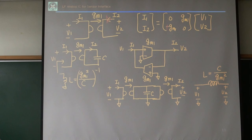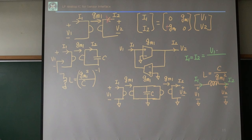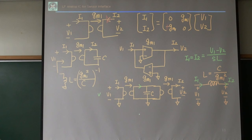Let's verify whether this works. I need to check that i1 equals i2. Looking at the right-hand circuit, i1 must equal i2 and satisfy the floating inductor equation. Looking at this node, this current is gm times v1.